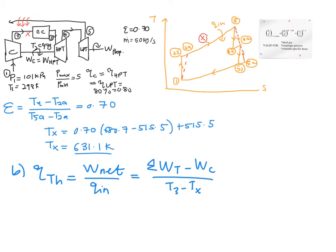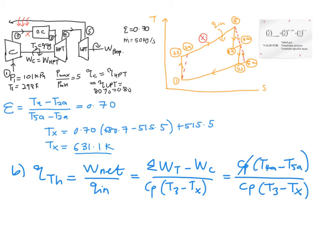Since the work of your high pressure turbine is equal to the work of your compressor, it will cancel one another. This will leave you with Cp times T4a minus your T5a, and it is over your Cp T3 minus your TX. You can cancel out the Cp terms, so finally what's left is T4a minus T5a over T3 minus TX.